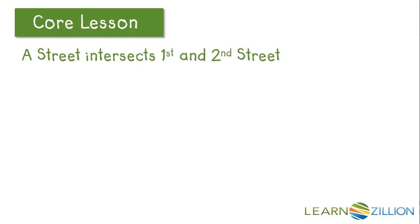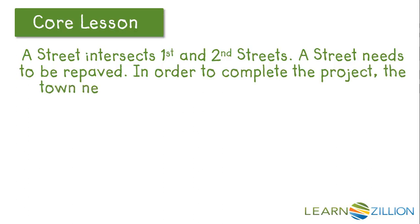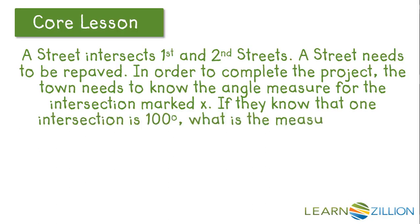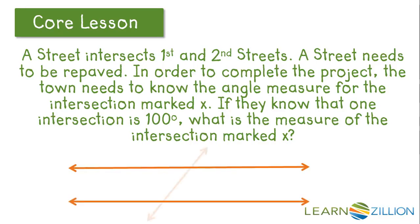A Street intersects First and Second Streets. A Street needs to be repaved, and the town needs to know the angle measure for the intersection marked X. If they know that one intersection is 100 degrees, what is the measure of the intersection marked X? We have two streets intersected by a third street. First and Second Streets are parallel to each other and intersected by A Street. The intersection of Second Street and A Street creates a 100 degree angle, and we want to find the measure of angle X.